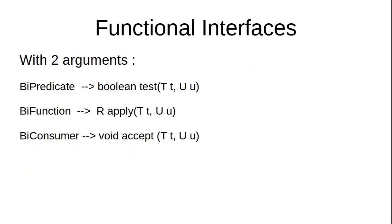These same four pillars also have variants that accept two arguments. BiPredicate has the same test() method but now takes two parameters T and U. BiFunction has the same apply() method with two inputs. BiConsumer also takes two input parameters T and U and returns nothing. Note that there is no BiSupplier.